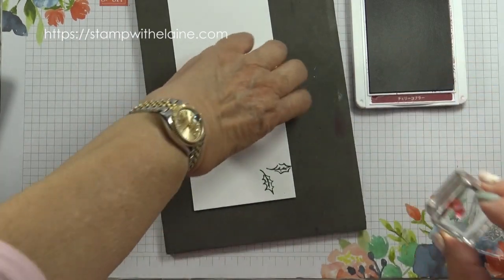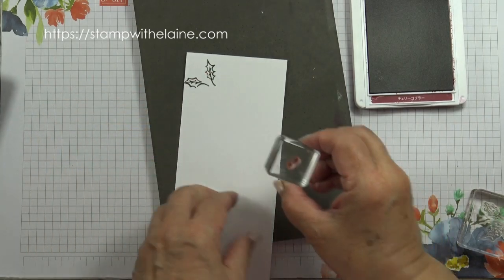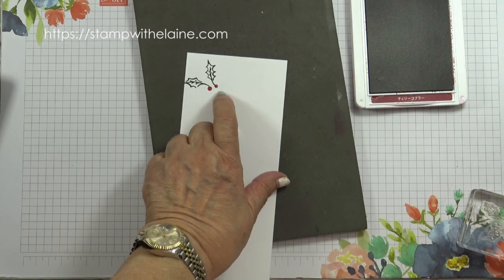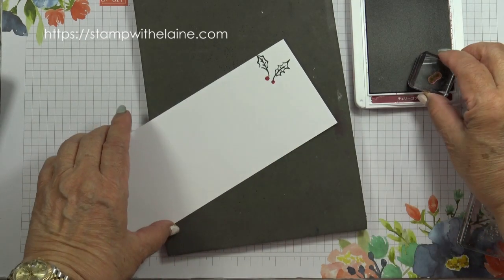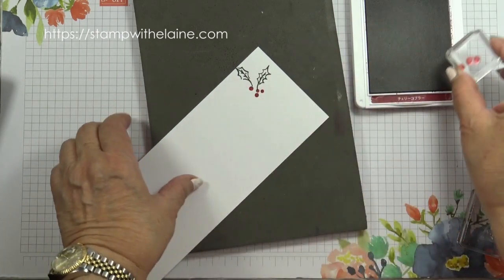Swap ink pads to cherry cobbler. And there are two dots in the stamp, so I'm just going to stamp it across the two leaves like so. And then for the other berries, I'll just stamp it to the side like so.